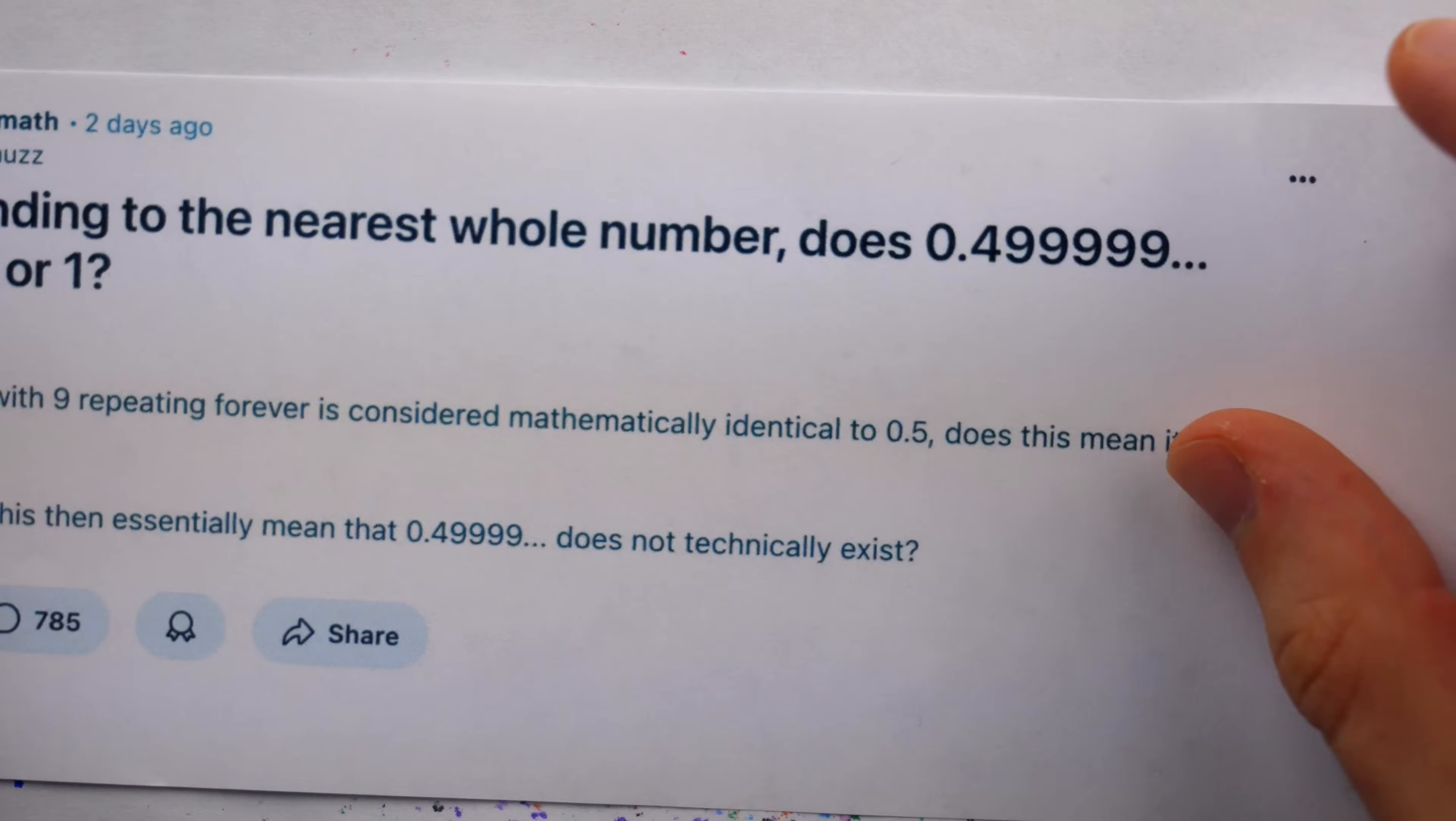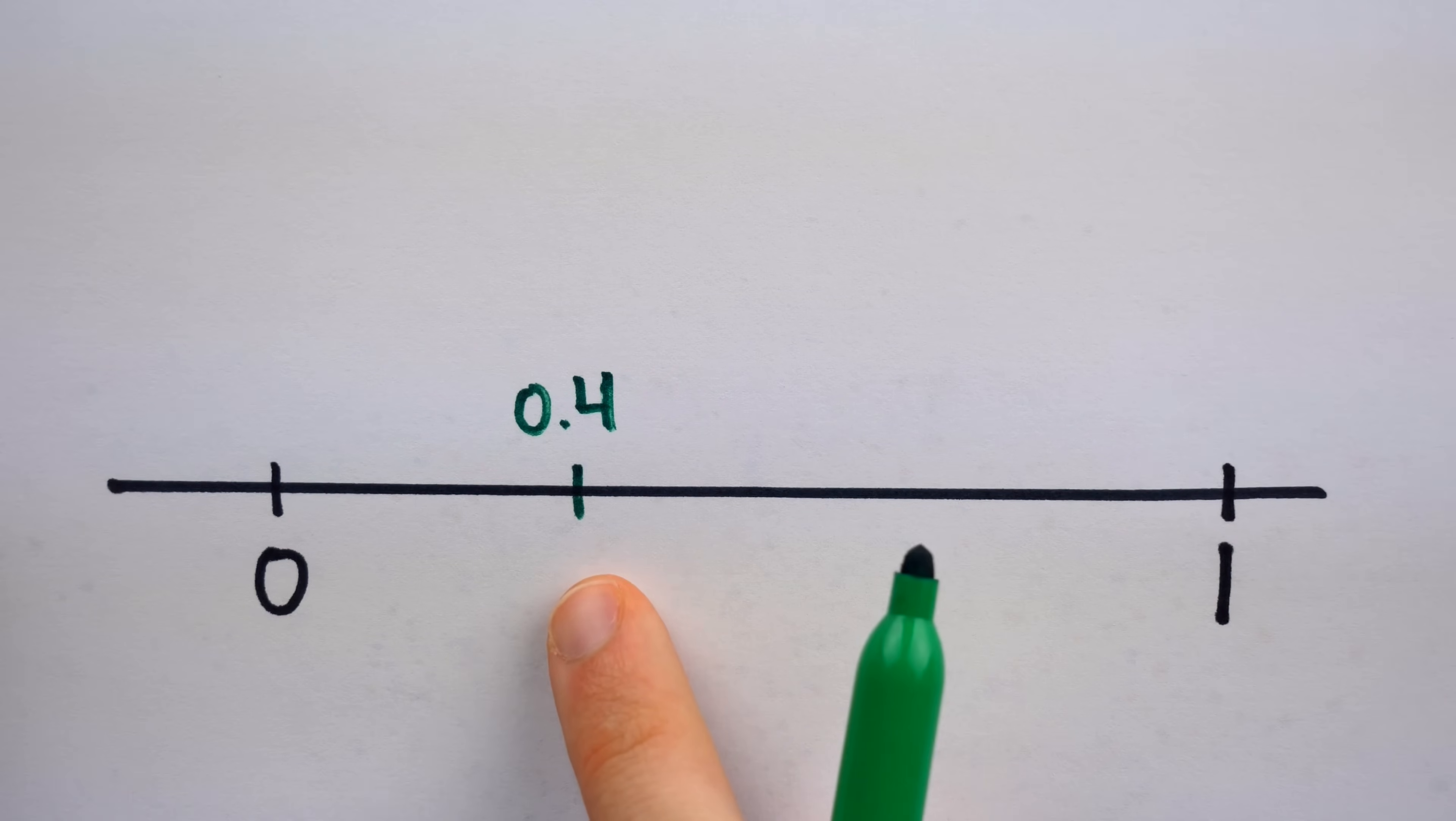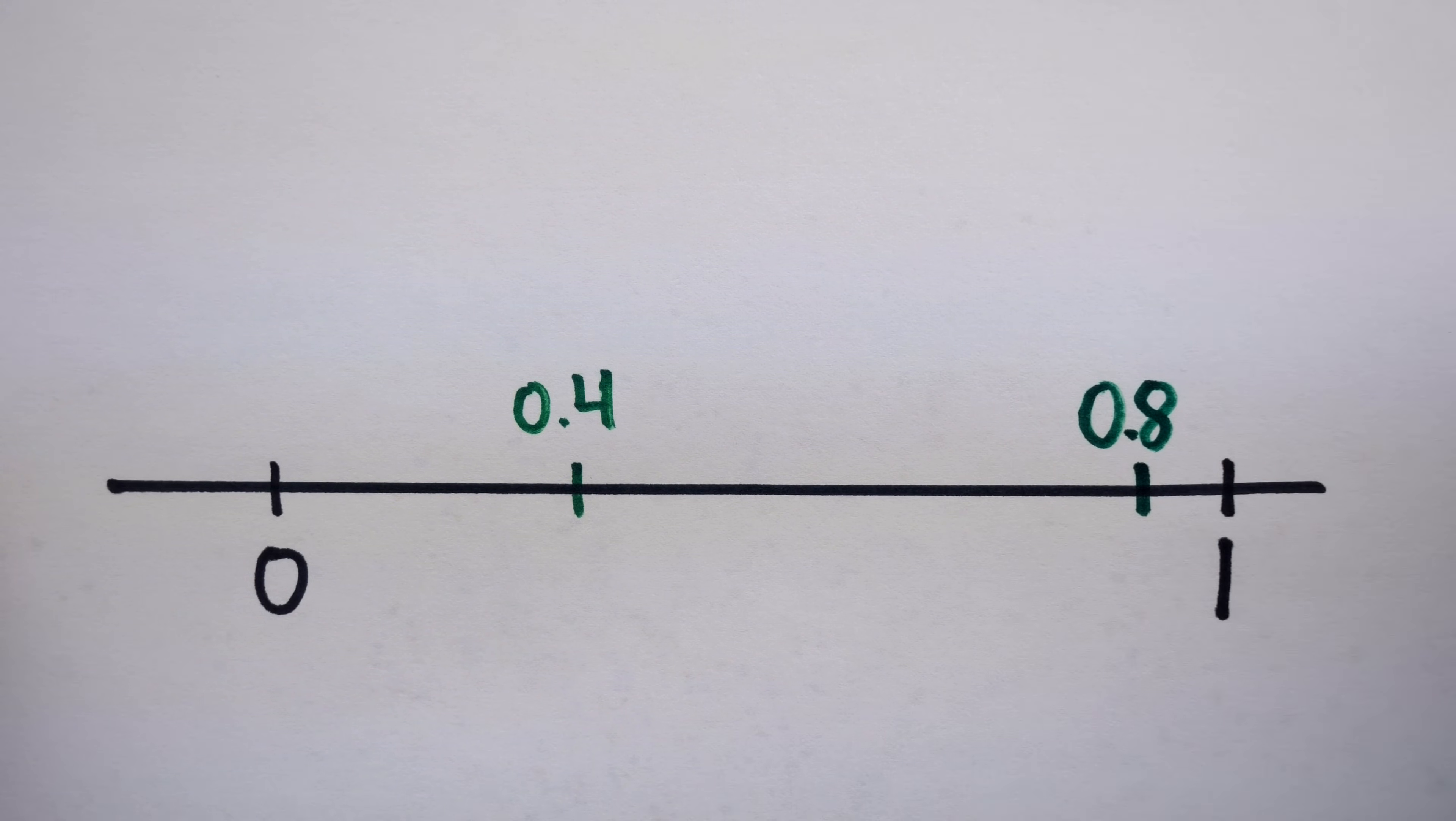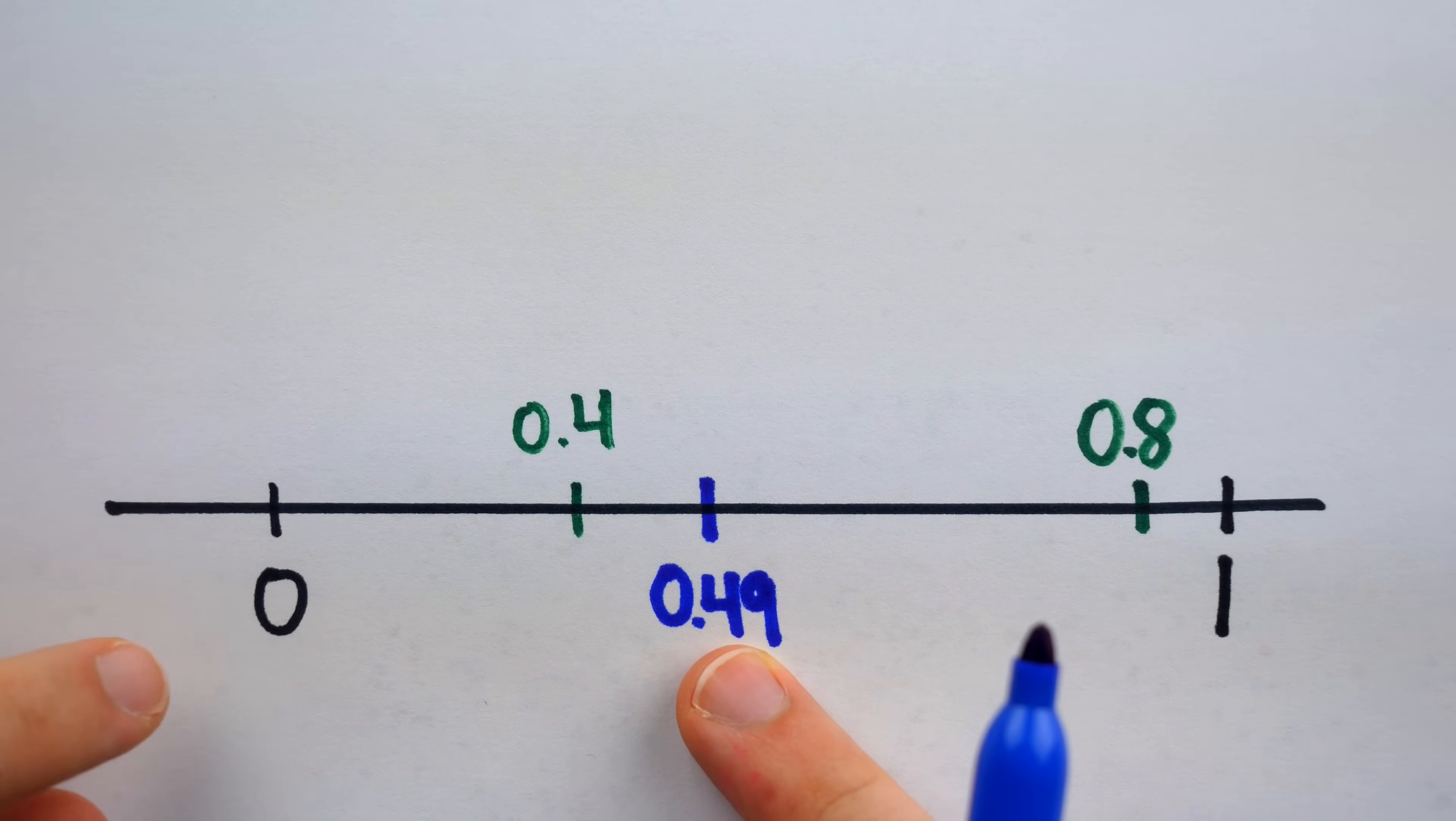Thankfully though, the OP has specified the rules where it's supposed to round to the nearest whole number. So not necessarily round up or necessarily round down, but just round to whatever the nearest whole number is. A number like 0.4, for example, is 0.6 away from 1, but only 0.4 away from 0. So we would round it down to zero. A number like 0.8 is 0.8 away from 0, but only 0.2 away from 1. So we would round this up to 1. For a number like 0.49, it's a bit of a close call. It's 0.51 away from 1, but slightly less 0.49 away from 0. So it's close, but we would round it down to zero.